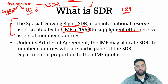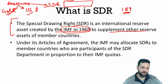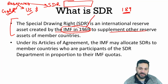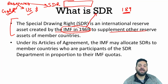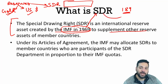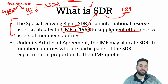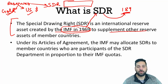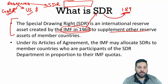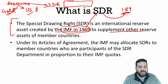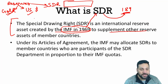Right now there are 189 members of the IMF. The IMF created SDRs and divided them among those 189 members according to their IMF member quotas.